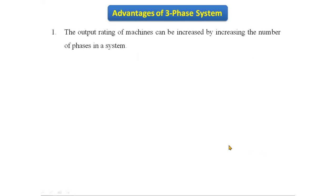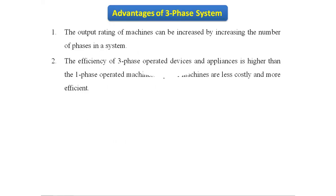The next advantage: the output rating of machines can be increased by increasing the number of phases in the system. Next, the efficiency of three-phase operated devices and appliances is higher than single-phase operated machines. Three-phase machines are less costly and more efficient.